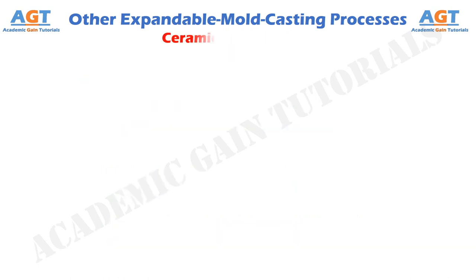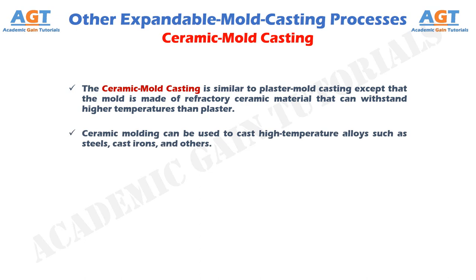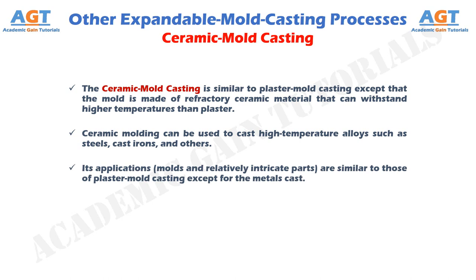Ceramic mold casting. The ceramic mold casting is similar to plaster mold casting, except that the mold is made of refractory ceramic material that can withstand higher temperatures than plaster. Ceramic molding can be used to cast high temperature alloys such as steels, cast irons, and others. Its applications — molds and relatively intricate parts — are similar to those of plaster mold casting, except for the metals cast. Advantages of ceramic mold casting are also similar to those of plaster mold casting.